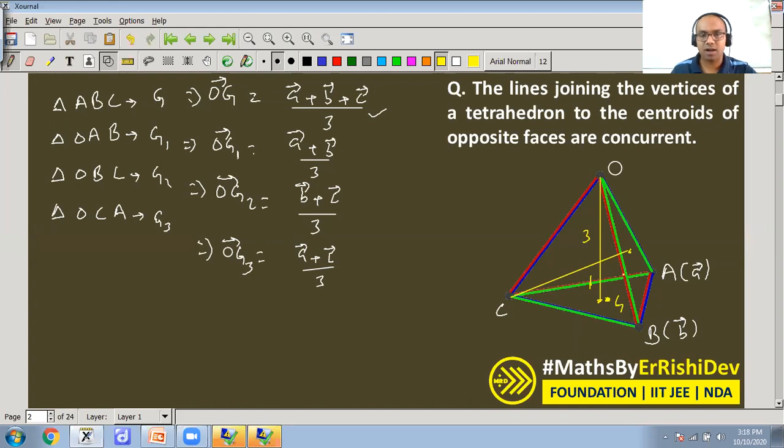That is where the ratio is. Now if you have any tetrahedron, the center of gravity divides 3:1.